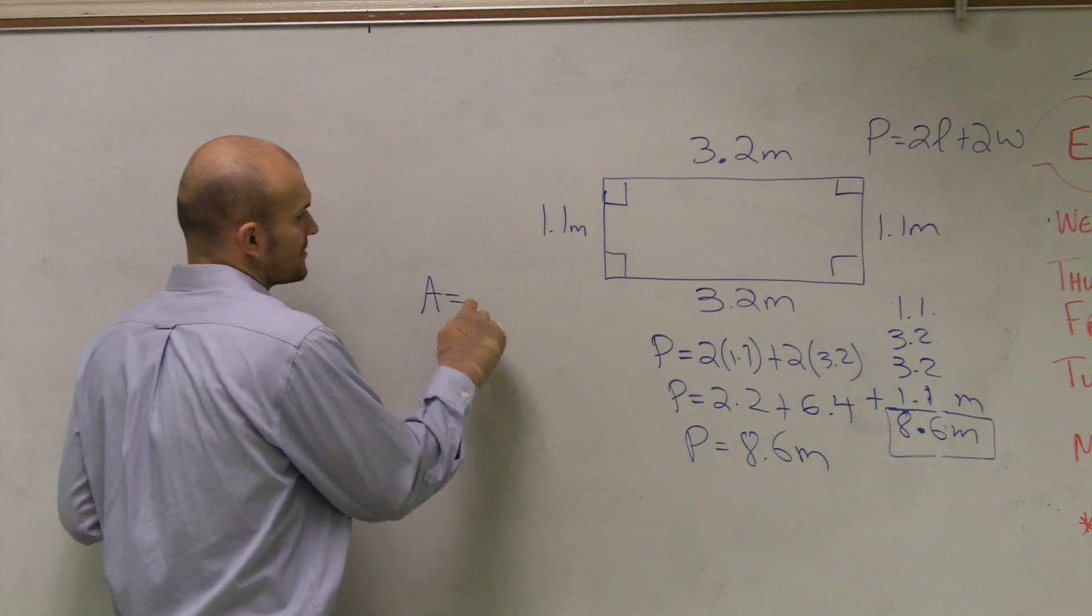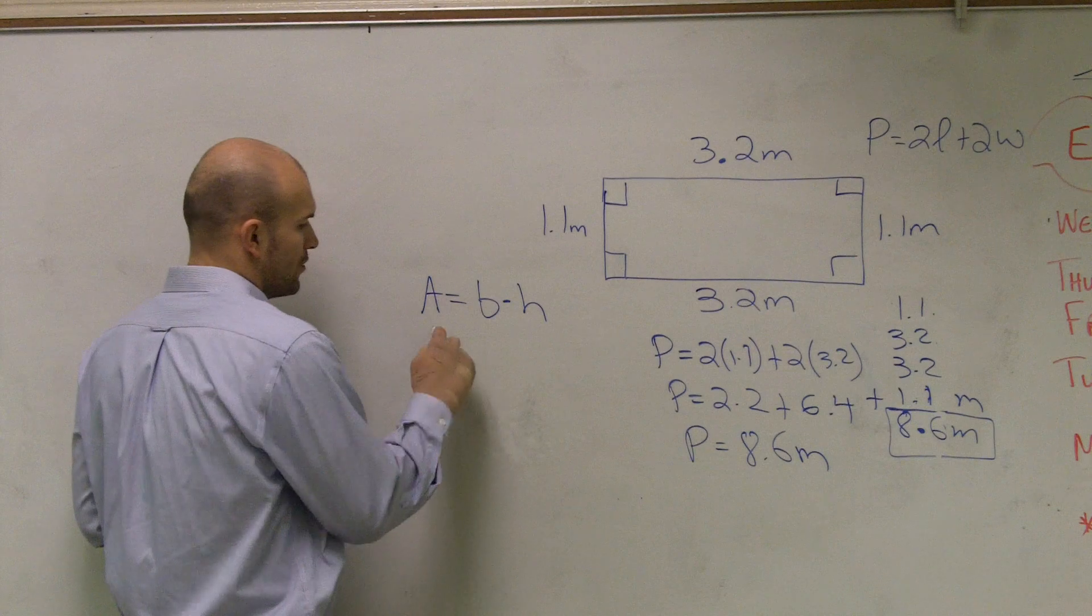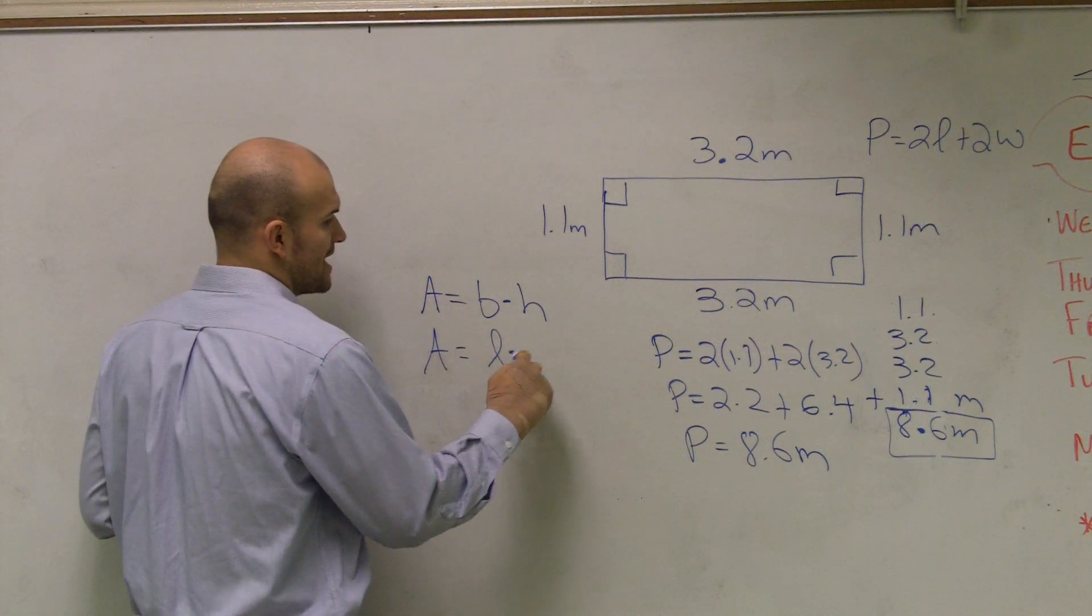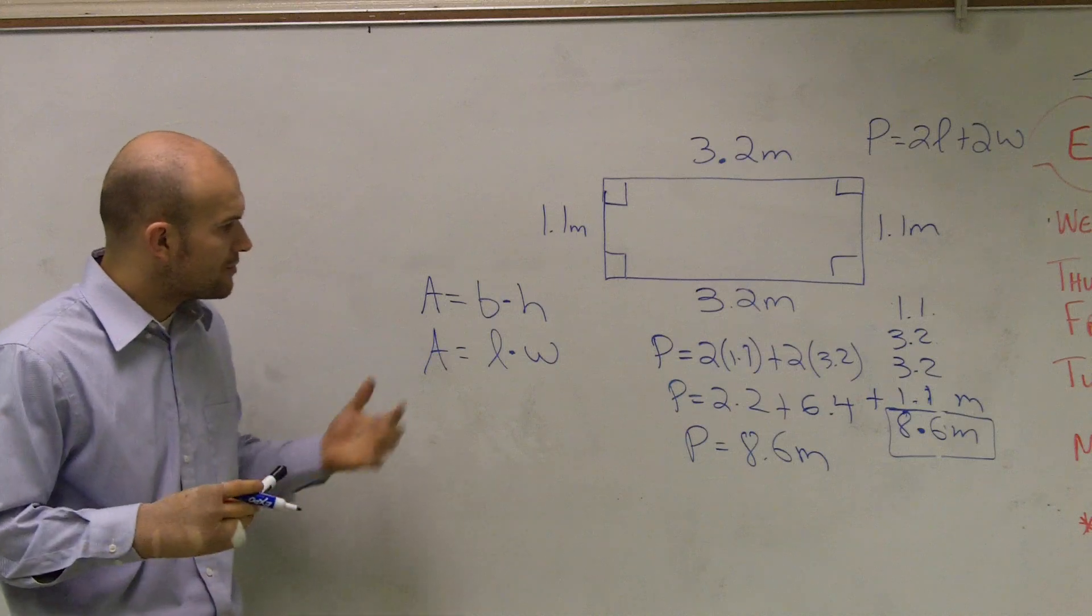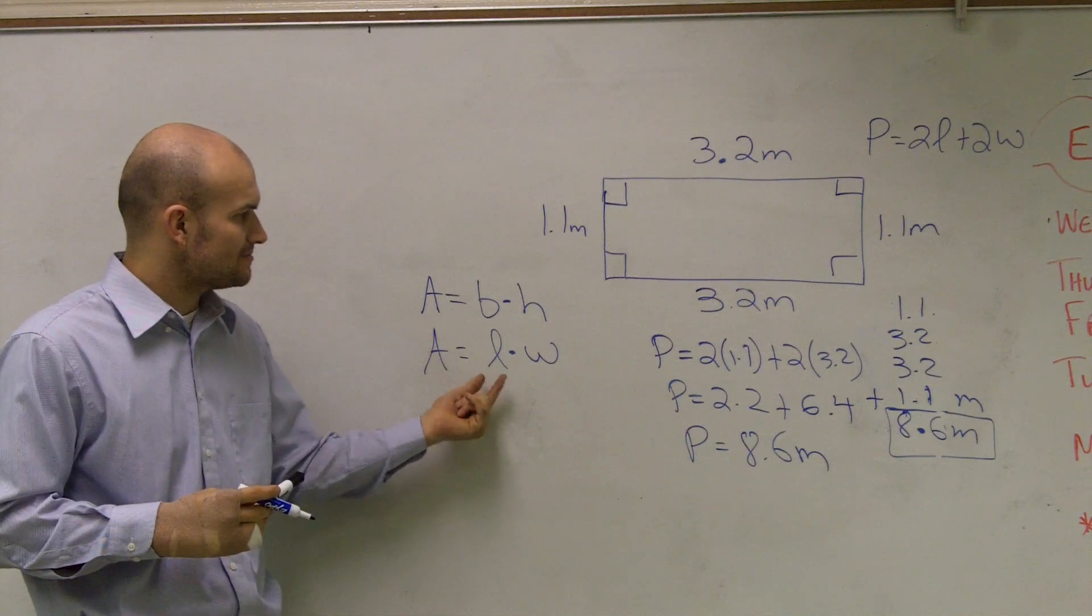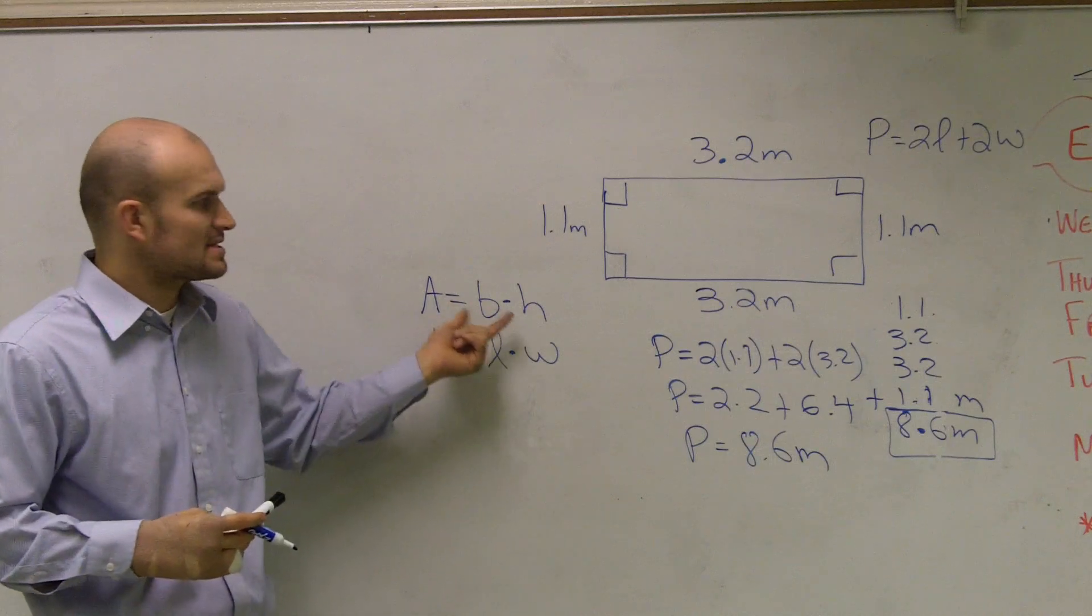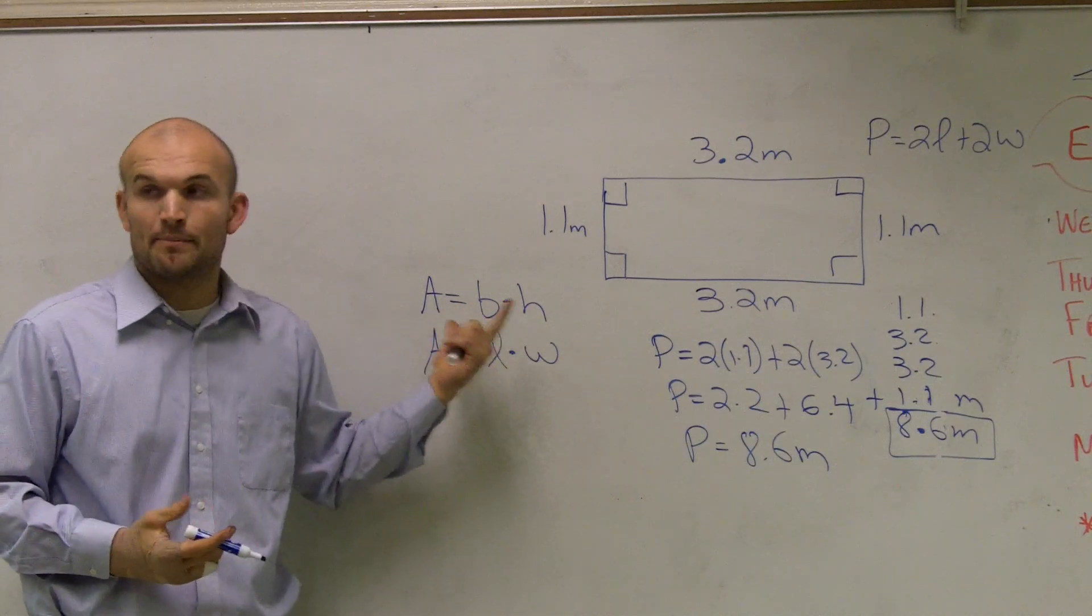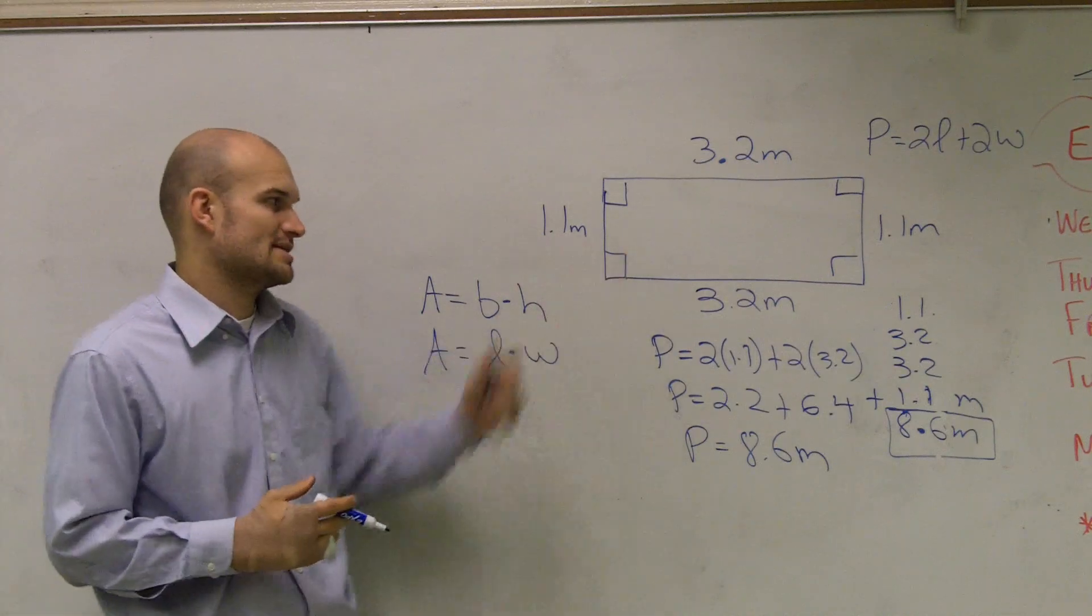Now, to find the area, the area is going to be, a lot of times, we say base times height, or we say area equals length times width. And it really doesn't matter which one you want to use. The more common way, though, is we like to say length times width. Sometimes we'll say your base times your height when we really are concerned with what the base is of a figure. But length times width would be very sufficient for a rectangle.